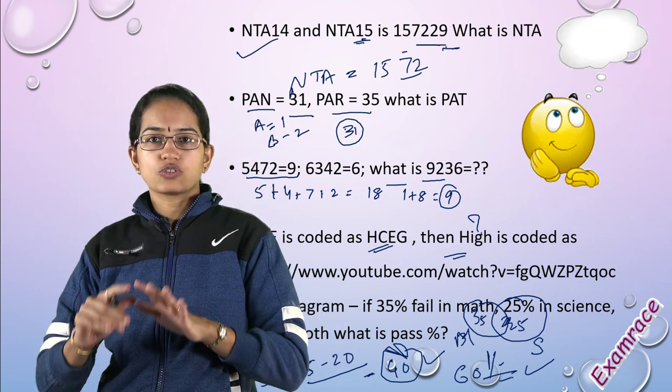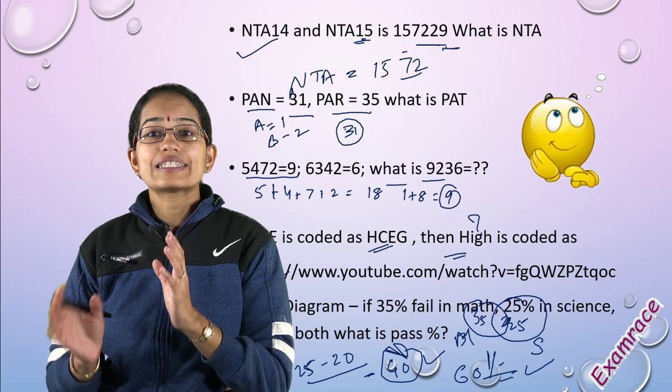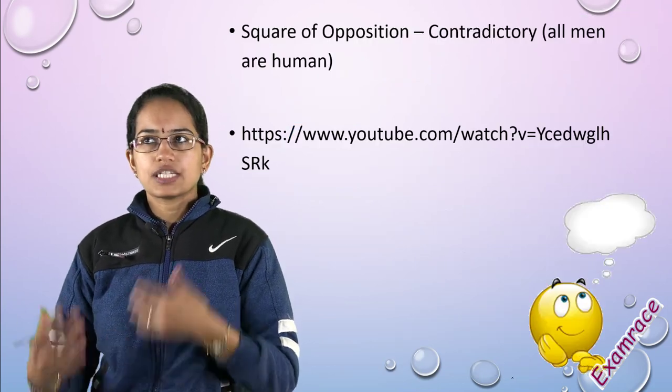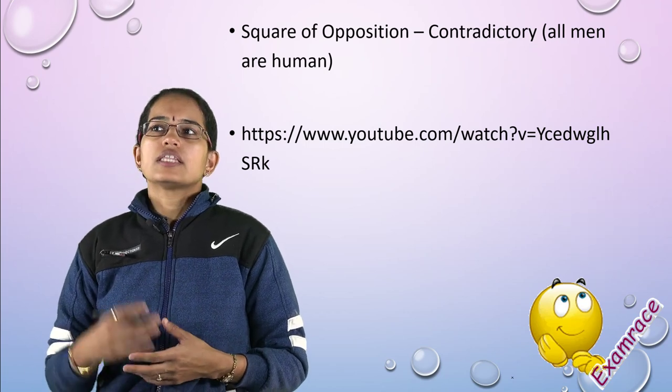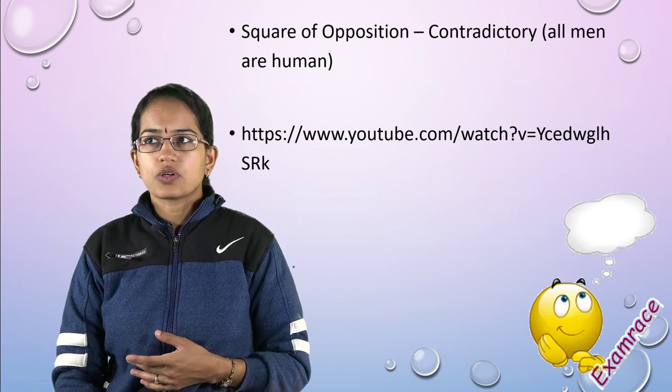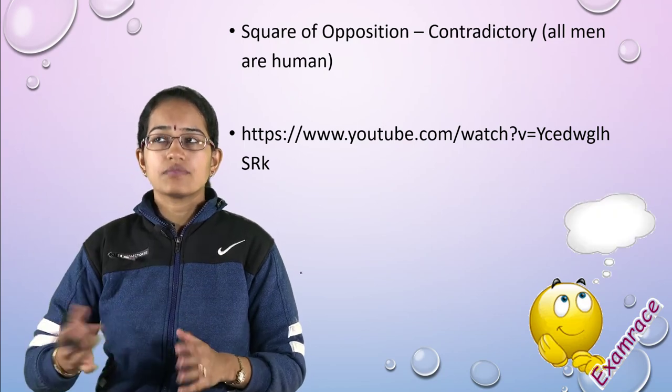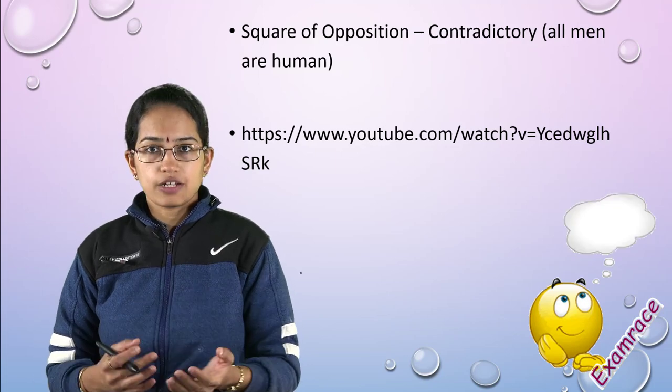It's important to understand the values we're taking are not exact values - this is memory-based. We're understanding the types of questions asked for your exam. For each paper, similar questions were asked. Now, square of opposition had a question on contradictory approach.